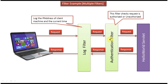The next resource in the chain is the authentication filter. What this authentication filter will do is it will check whether the username and password which the client entered on the login page is correct or not. If it is correct, then it will forward the request to the HelloWorld servlet, which is the next resource in the chain.